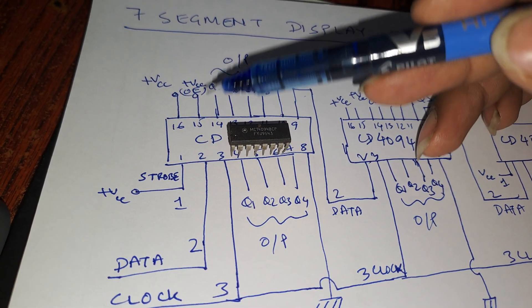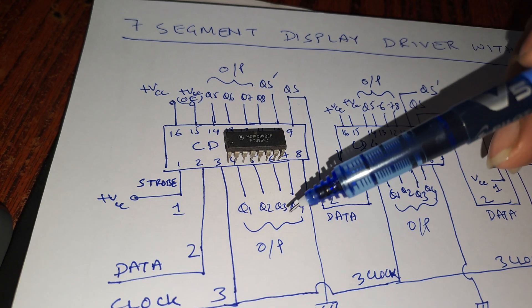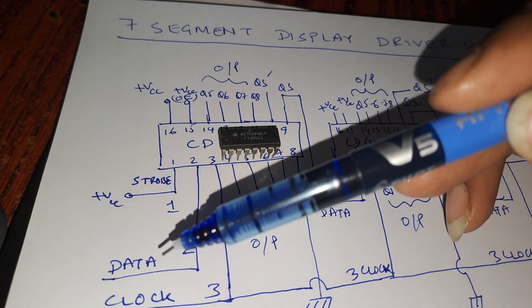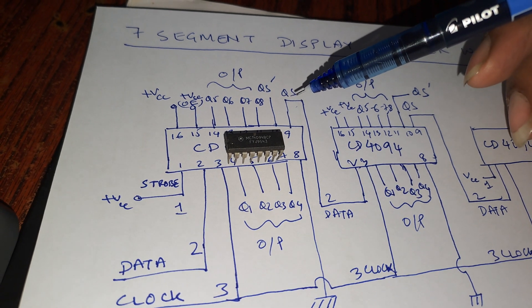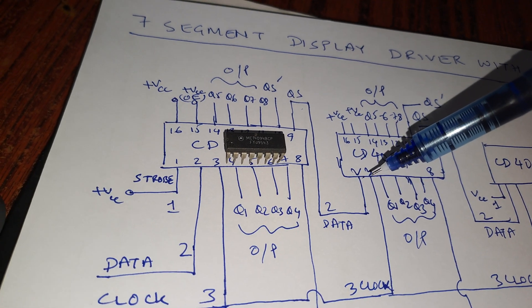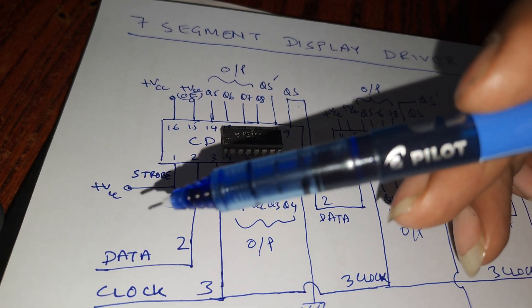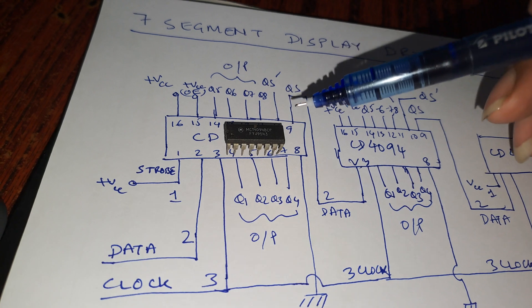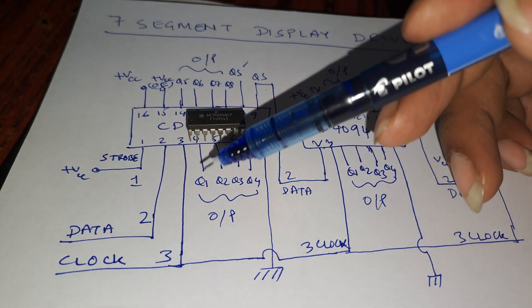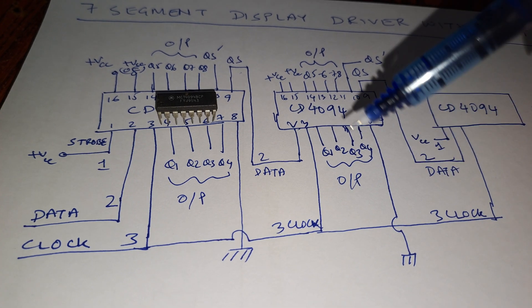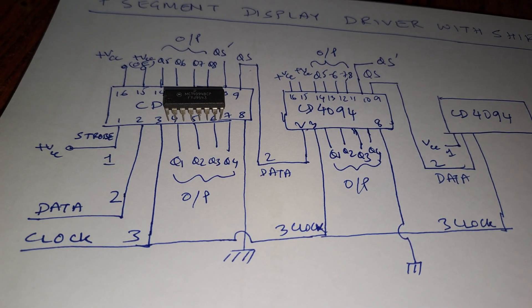With this connection, data is transferred to the second shift register. Basically we are feeding serial data and converting it into 8-bit parallel data — serial-in parallel-out. The first bit of data is transferred to QS, and from QS it goes to pin two of the next shift register. Whether you send MSB or LSB first, it will arrive at QS accordingly and cascade through. The clock signal is common to all shift registers.